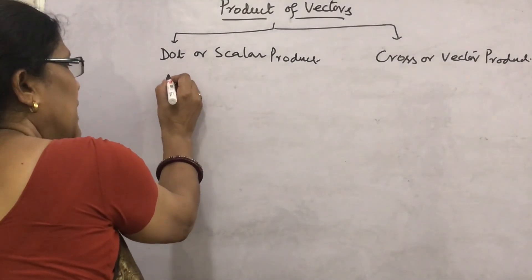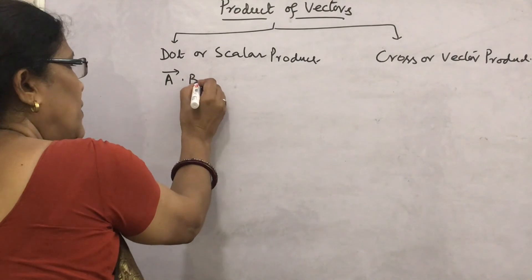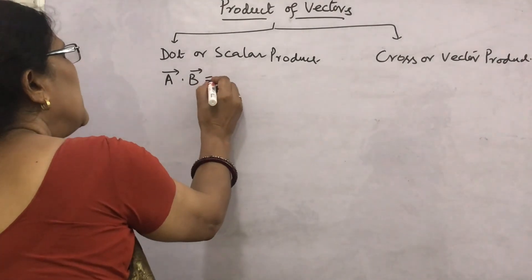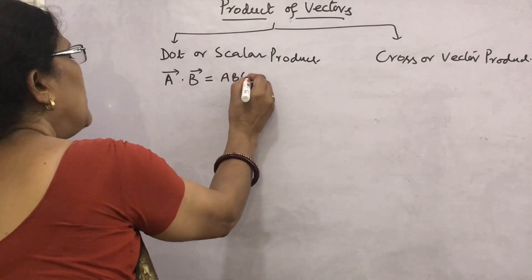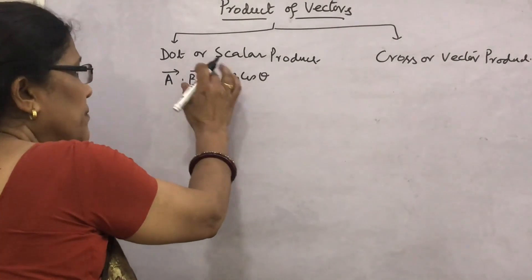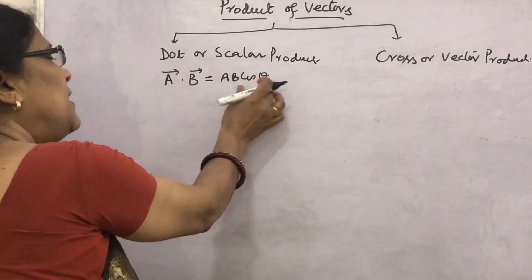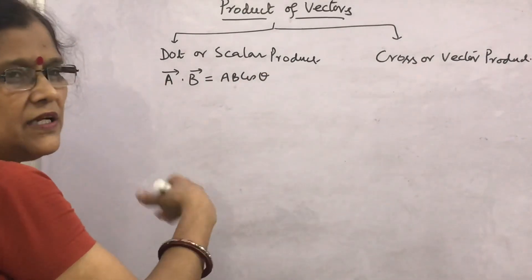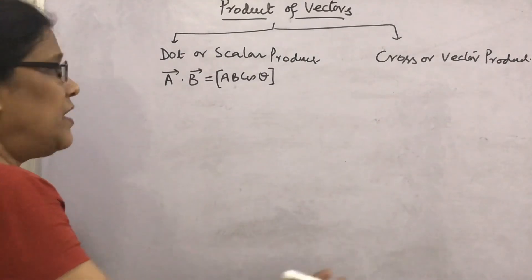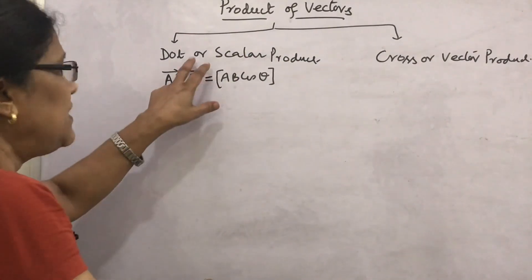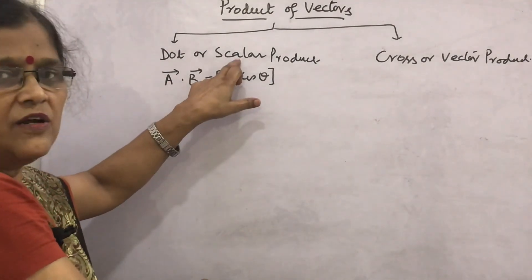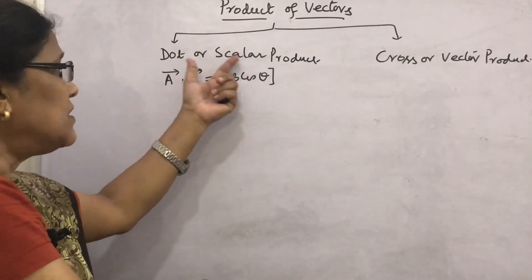Suppose two vectors are a and b. If it is written as a dot b by putting a dot, we are multiplying the vectors and we get the result as ab cosθ. Theta is the angle between the two vectors, a is the magnitude of vector a, b is the magnitude of vector b. This whole product ab cosθ is a scalar, and we put a dot here — that is why its name is dot product or scalar product.